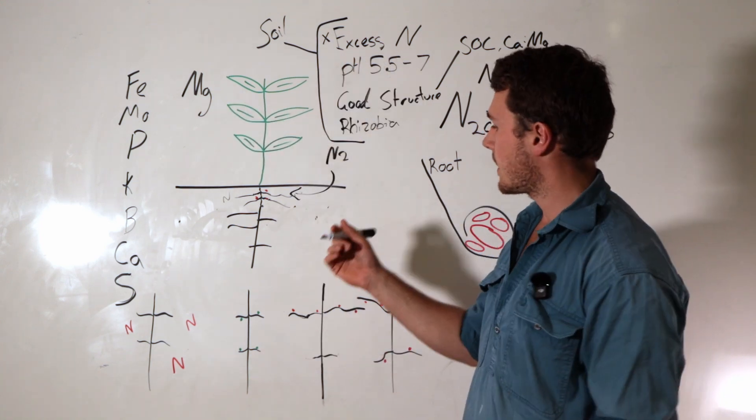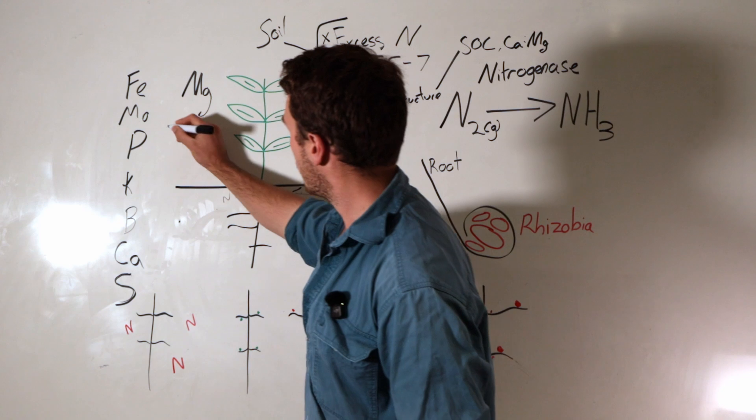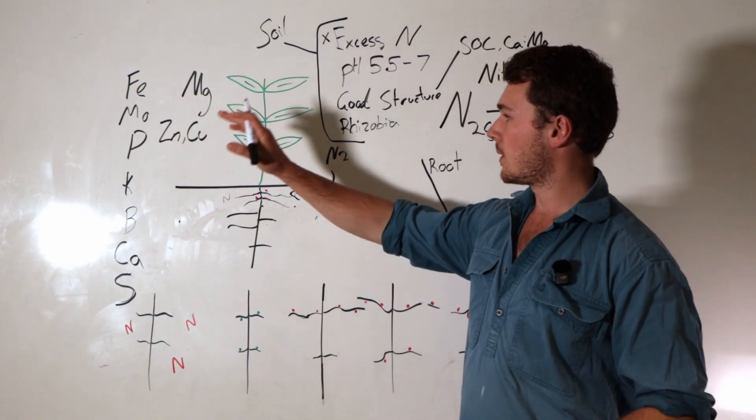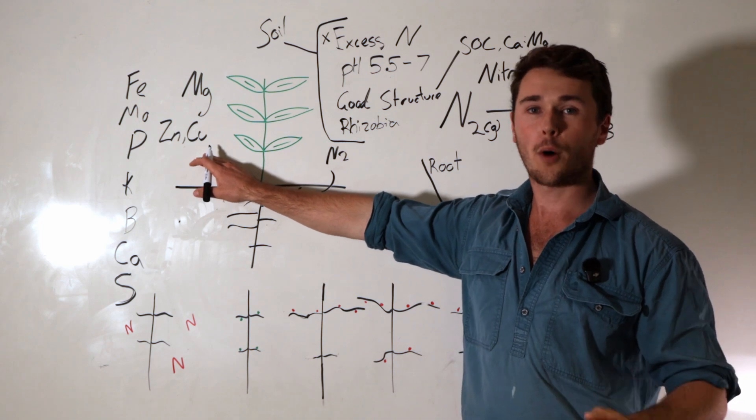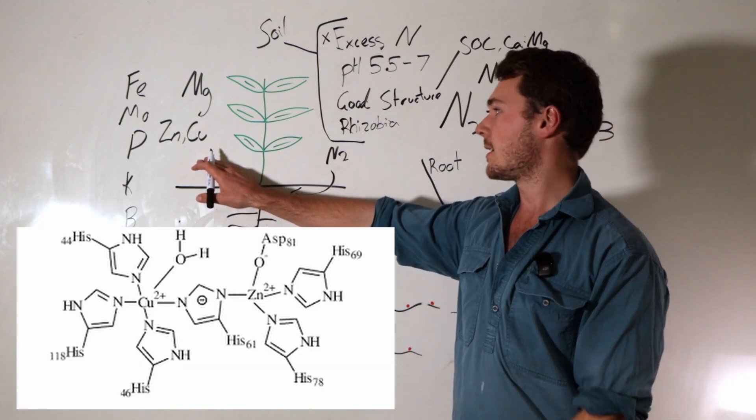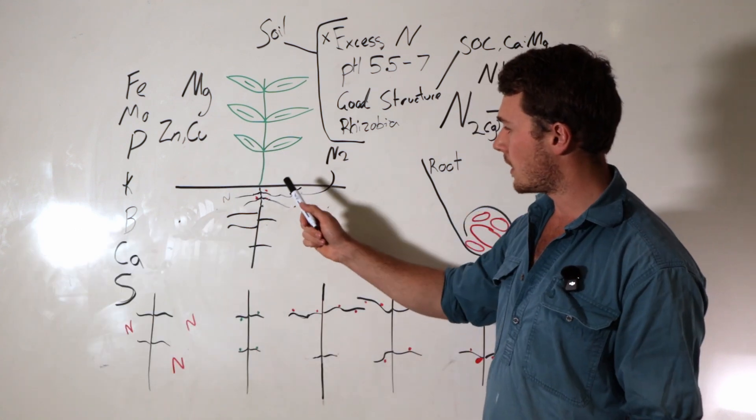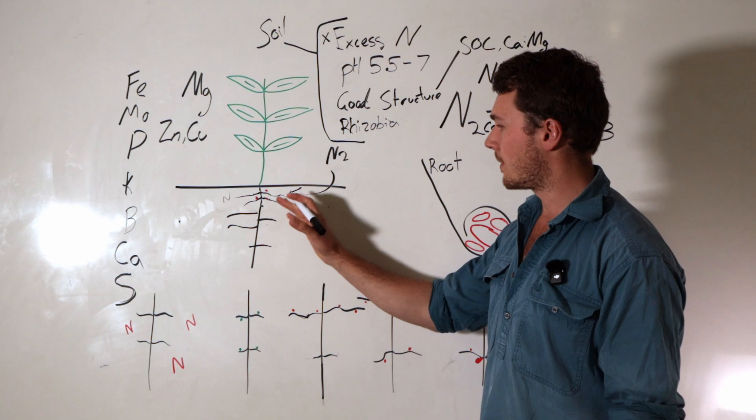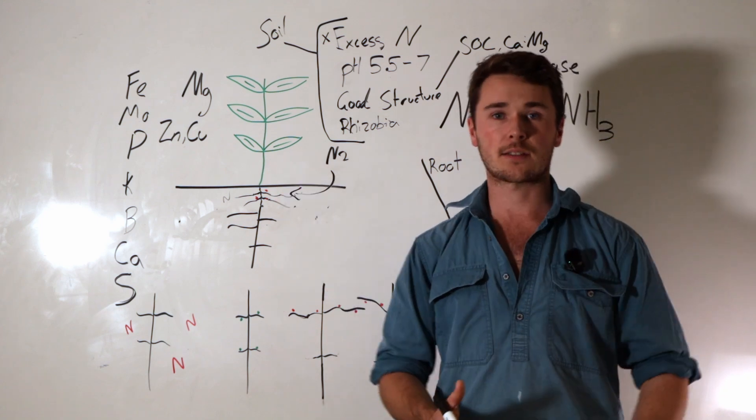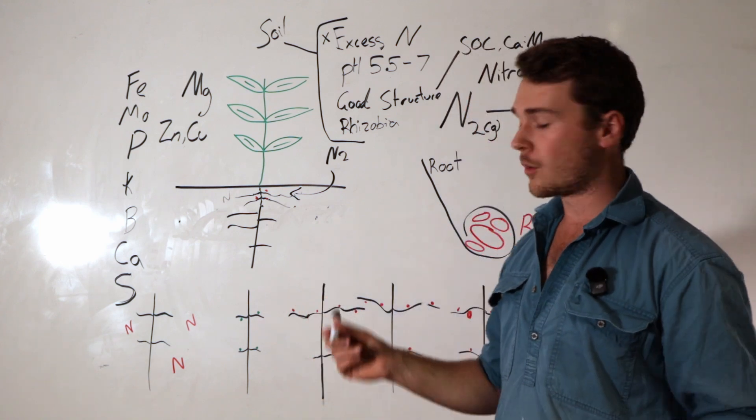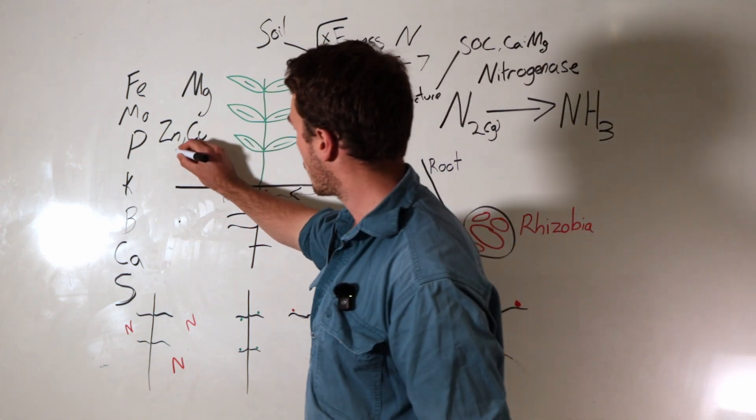The next minerals is a combined effort with zinc and copper. So these two minerals are required in what's called the copper zinc superoxide dismutase, which helps reduce free radicals in the nodules. Overall, it's just going to help our nodules not get destroyed from the production of free radicals. And finally, a very important one that not many people consider is cobalt.